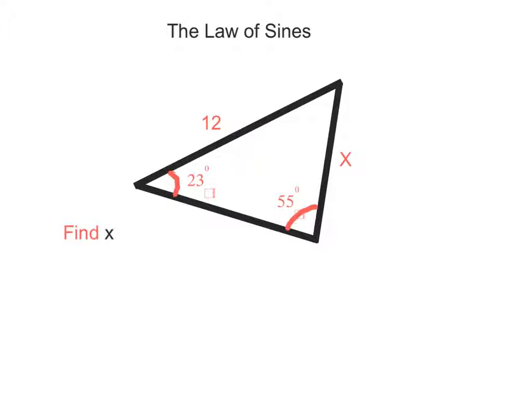The question says to find x, so we're going to find x. We know by the law of sines that a over sine A equals b over sine B, which equals c over sine C, and that is the formula.